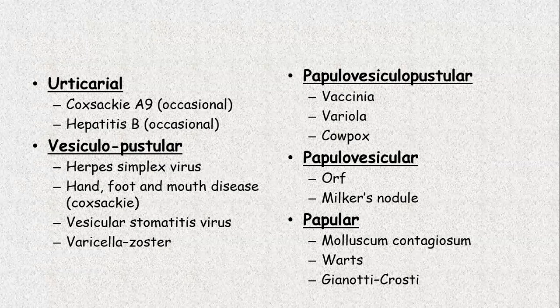Then a papillo-vesiculopustular rash — this kind of rash is seen in smallpox, that is variola, then vaccinia, and cowpox. The difference between the rash of smallpox and chickenpox or varicella zoster is that the rash due to varicella zoster virus is vesiculopustular, while a rash due to smallpox is papillo-vesiculopustular. Another nodular rash is seen in ORF and milker nodules. Only a papular rash is seen in molluscum contagiosum and genital warts.